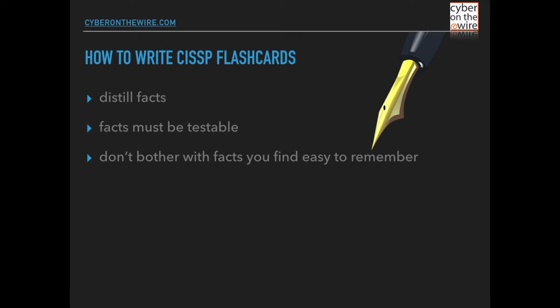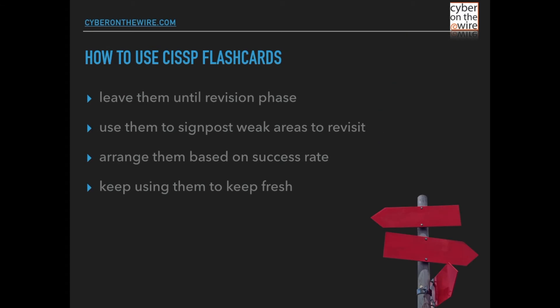Don't bother with facts that you find easy to remember. For example, I never wrote a flashcard covering the CIA triad — confidentiality, integrity, and availability — because I knew that's something I would never forget. So don't waste your time recording and revising facts that you don't struggle to remember in the first place.